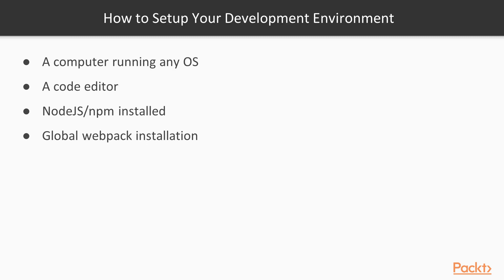Let's have a look at what you need to set up in order to make the most out of this course. You could use any operating system — this course is on Windows but it really doesn't make any difference. A good code editor is also important; this course uses Visual Studio Code but that's up to you. You should have Node.js installed on your machine. This course was made on top of Node.js version 8.9.1, and you are also advised to globally install Webpack for the front-end examples.